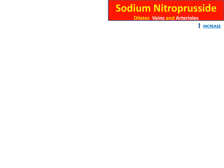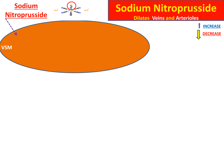Sodium nitroprusside will be dilating the veins and the arteries. By combining with oxyhemoglobin, it releases nitric oxide, which diffuses inside the vascular smooth muscle and stimulates guanylate cyclase enzyme, converting guanyl triphosphate to cyclic guanyl monophosphate (cGMP).